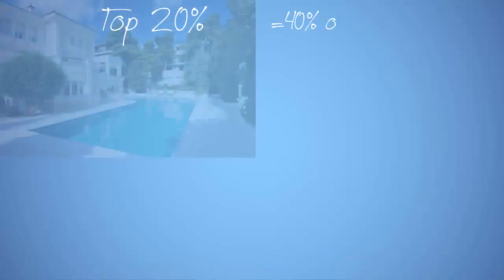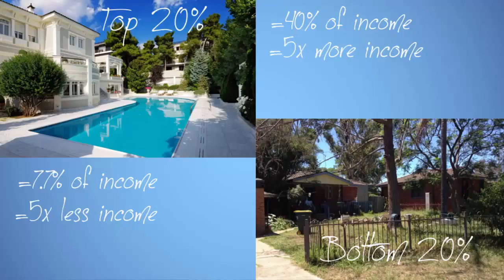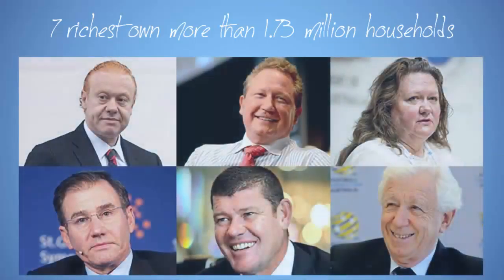For example, in Australia in 2011 and 2012, the top 20% of households received 40% of all income, while the bottom 20% received just 7.7%. The average income of the top 20% of households is five times that of the bottom 20%. The seven richest Australians now earn more wealth than the nation's poorest 1.73 million households.